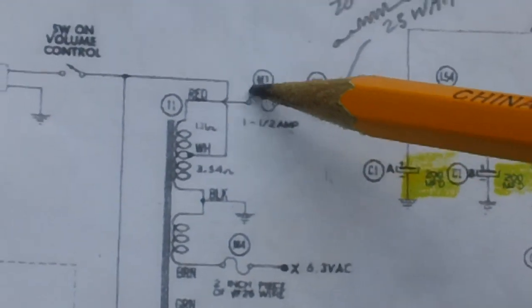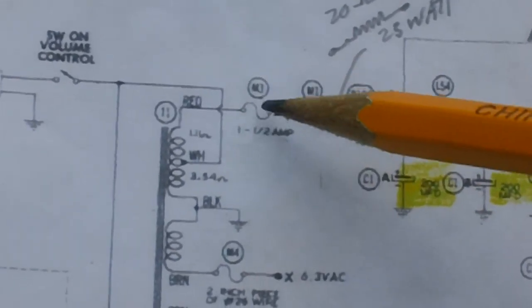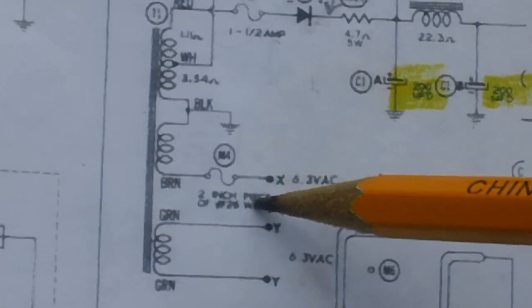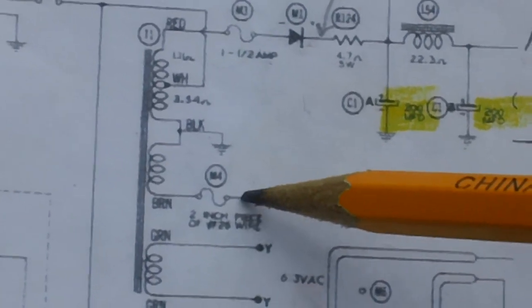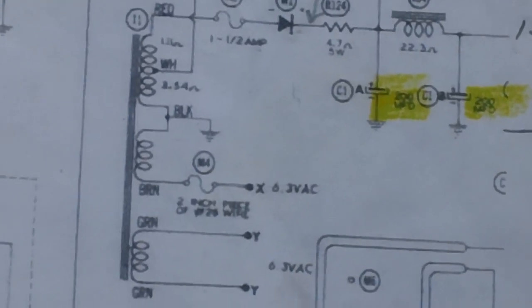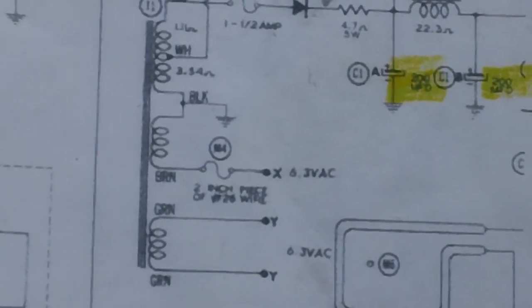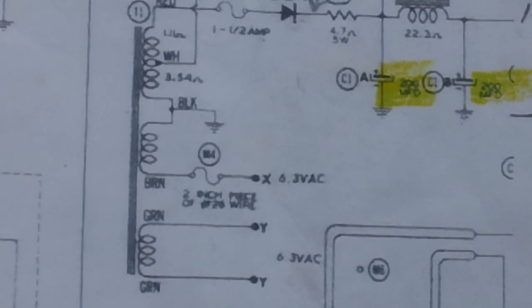Down here we have a two inch piece of 25 gauge wire that's acting as a fuse. I mean what is a fuse? It's just a piece of wire inside of a glass tube. Well you don't need the glass tube, you can just string a wire without it and that's what they did here.